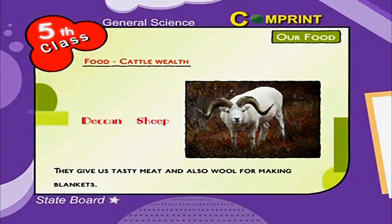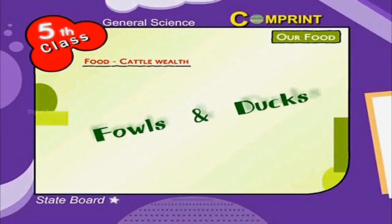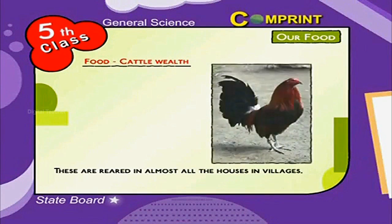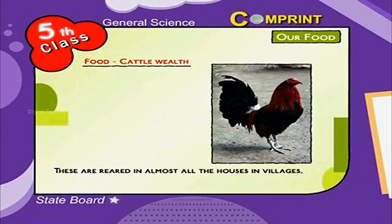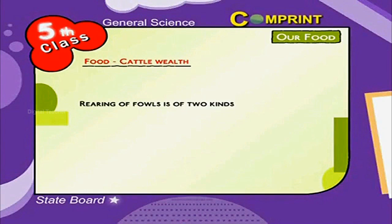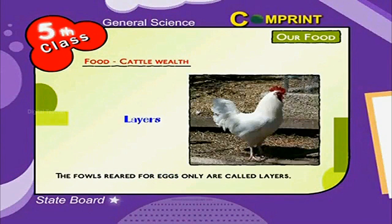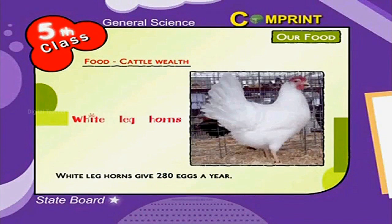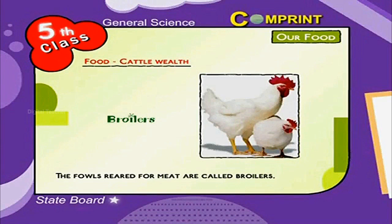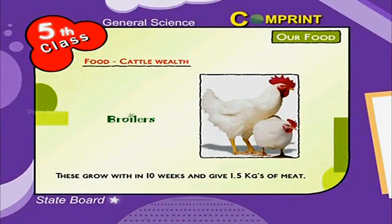Deccan sheep give tasty meat and also wool for making blankets. Fowls and ducks are reared in almost all houses in villages. Rearing of fowls is of two kinds: for eggs and for meat. Fowls reared for eggs only are called layers. For example, White Leghorns give 280 eggs a year. Fowls reared for meat are called broilers and grow within 10 weeks to give 1.5 kg of meat.